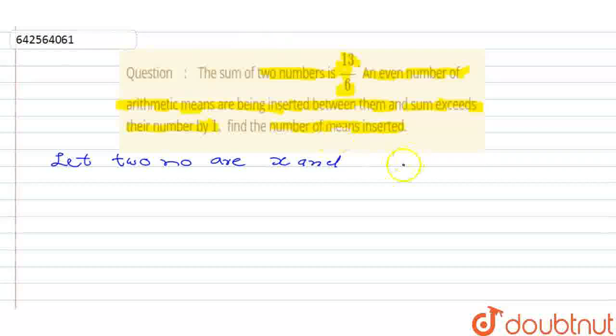So that means we can write here that x plus y is equal to 13 by 6. Okay, this is equation number one we have got.